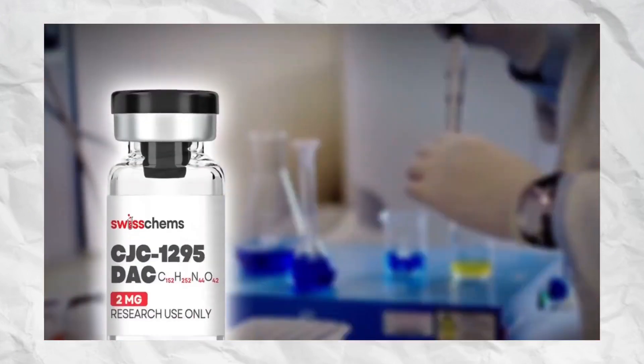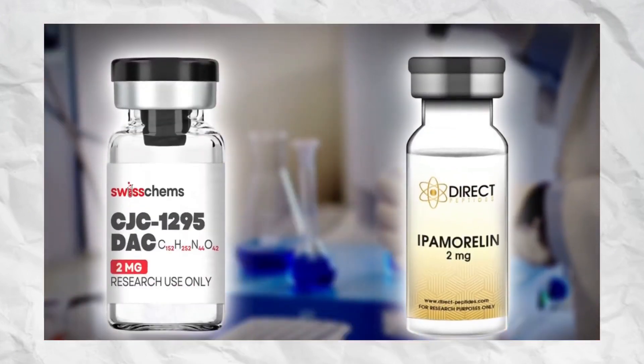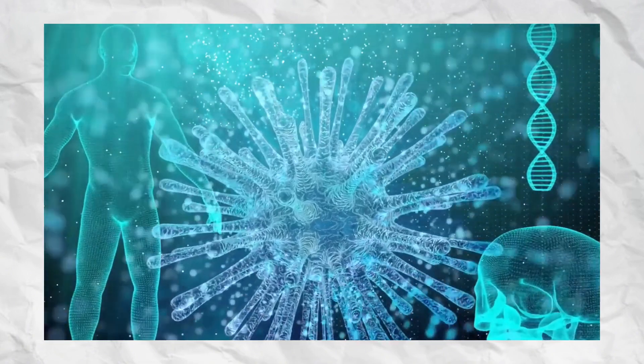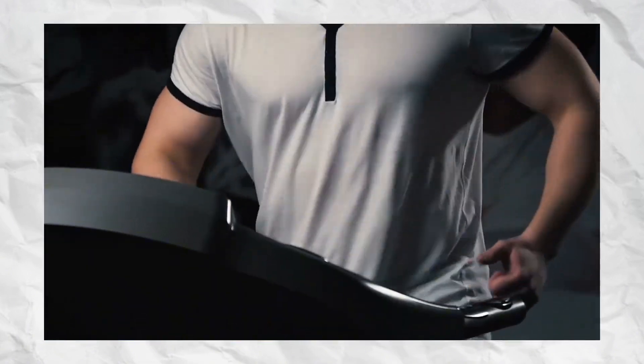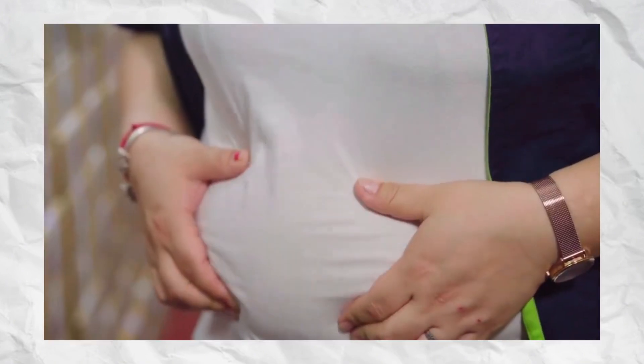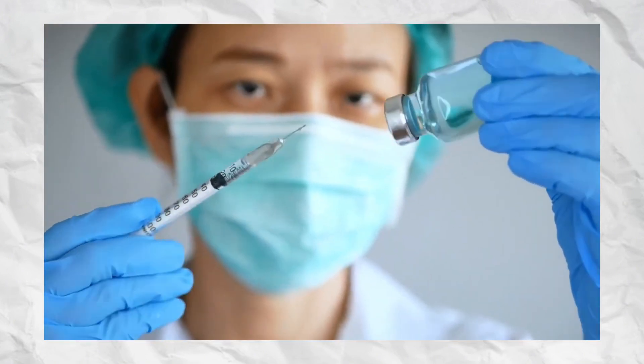There are two types: CJC-1295 with DAC, drug affinity complex, which extends its half-life to about a week, and CJC-1295 without DAC, which lasts only a few hours but mimics natural GH pulses more closely.